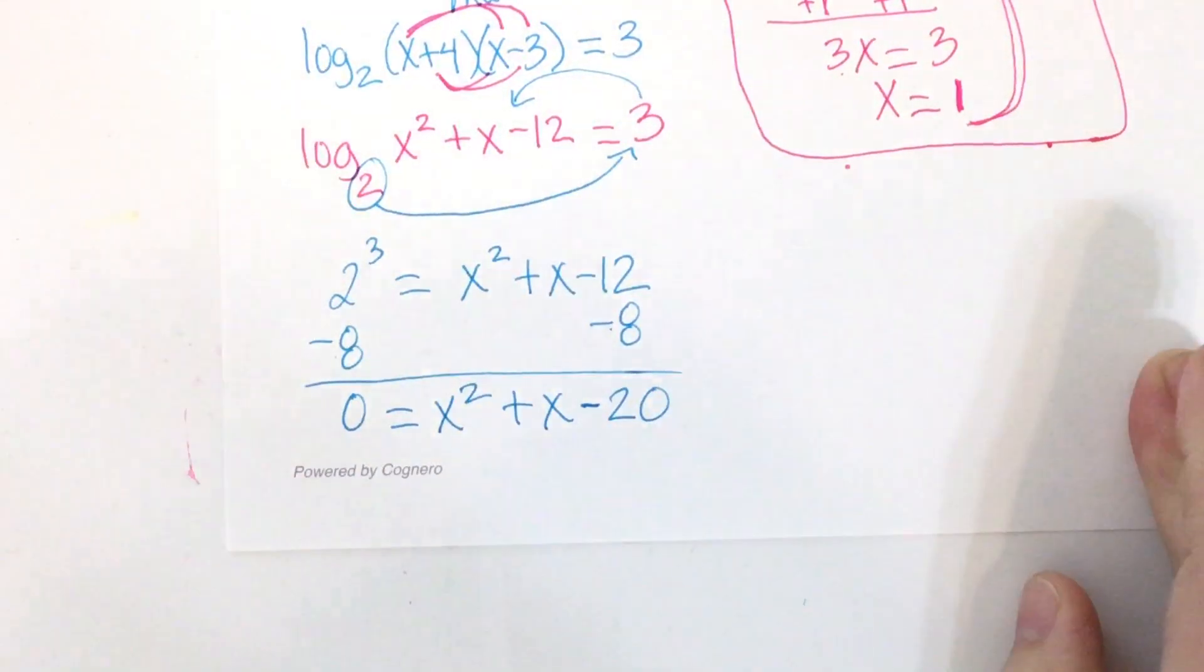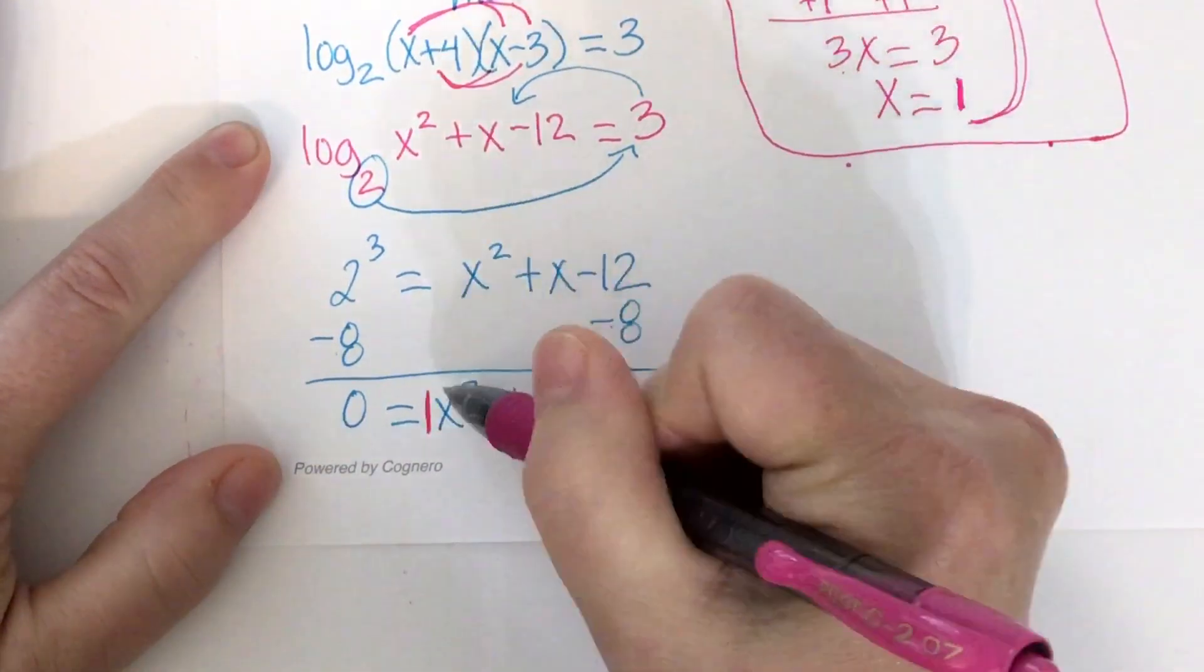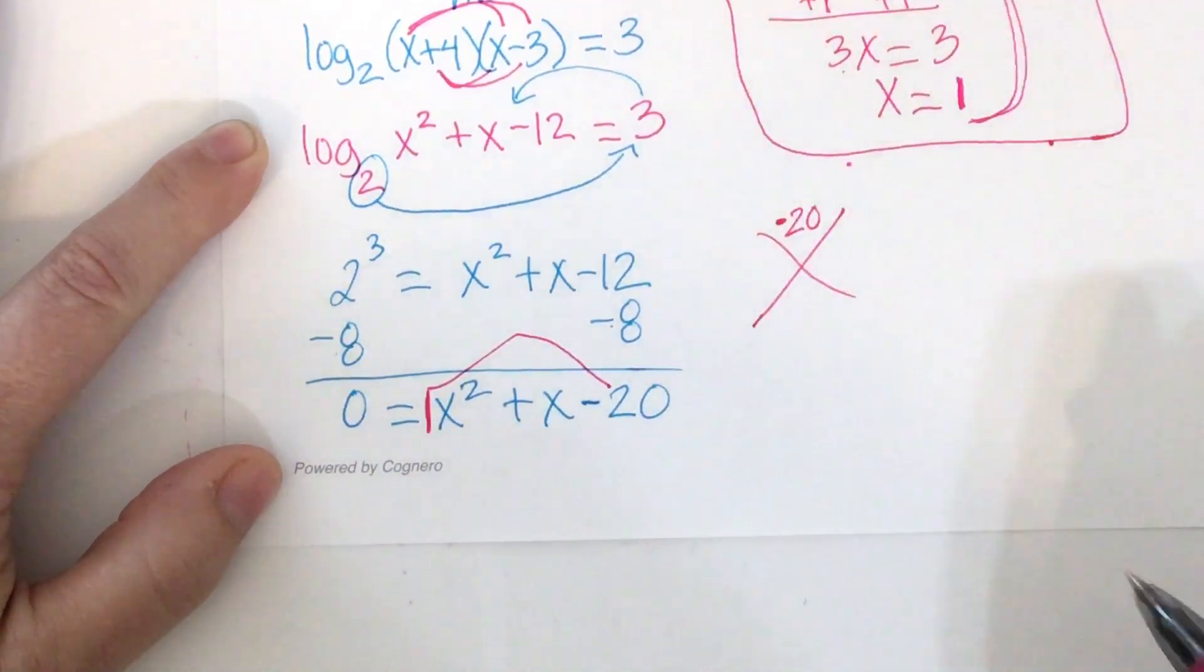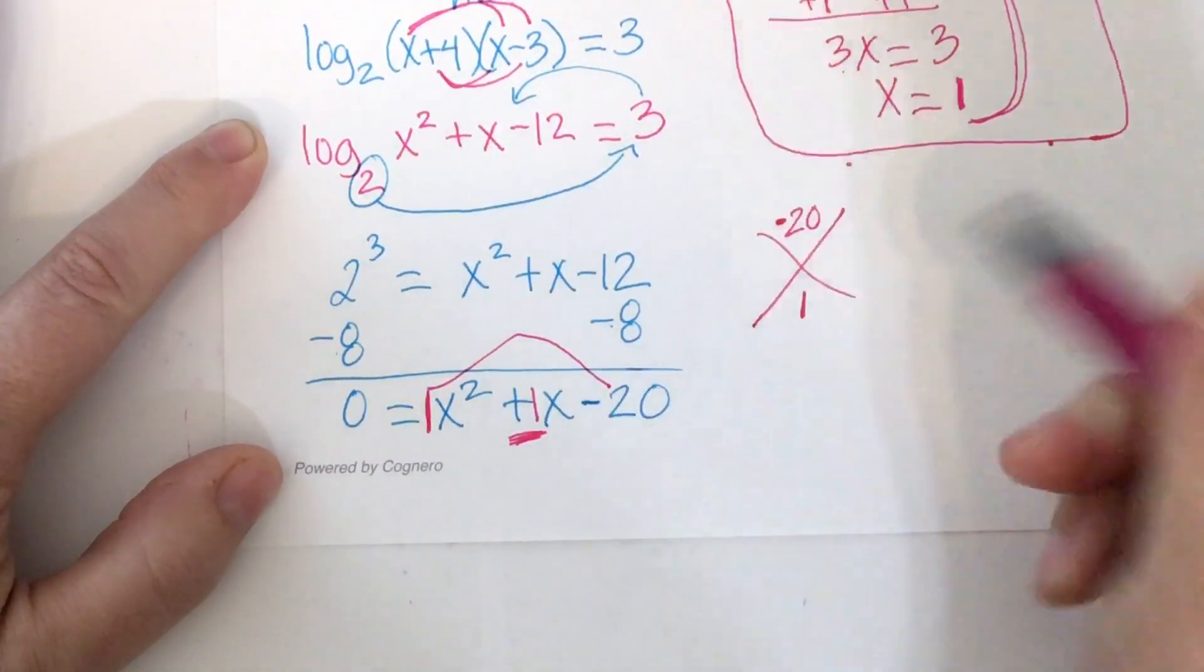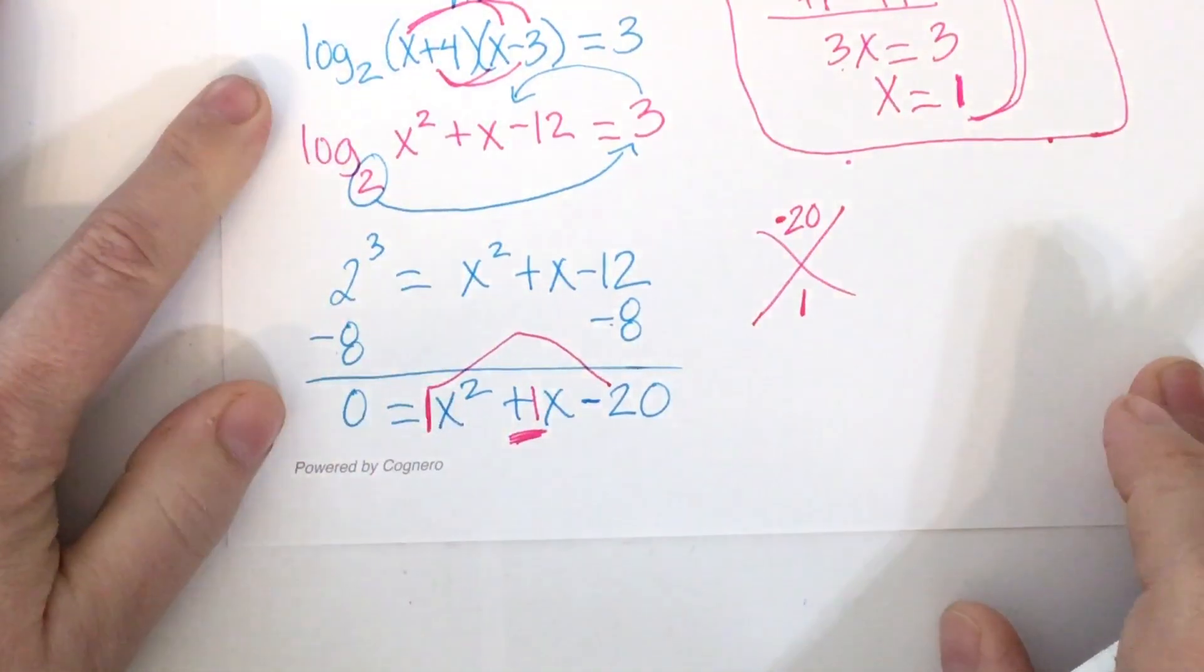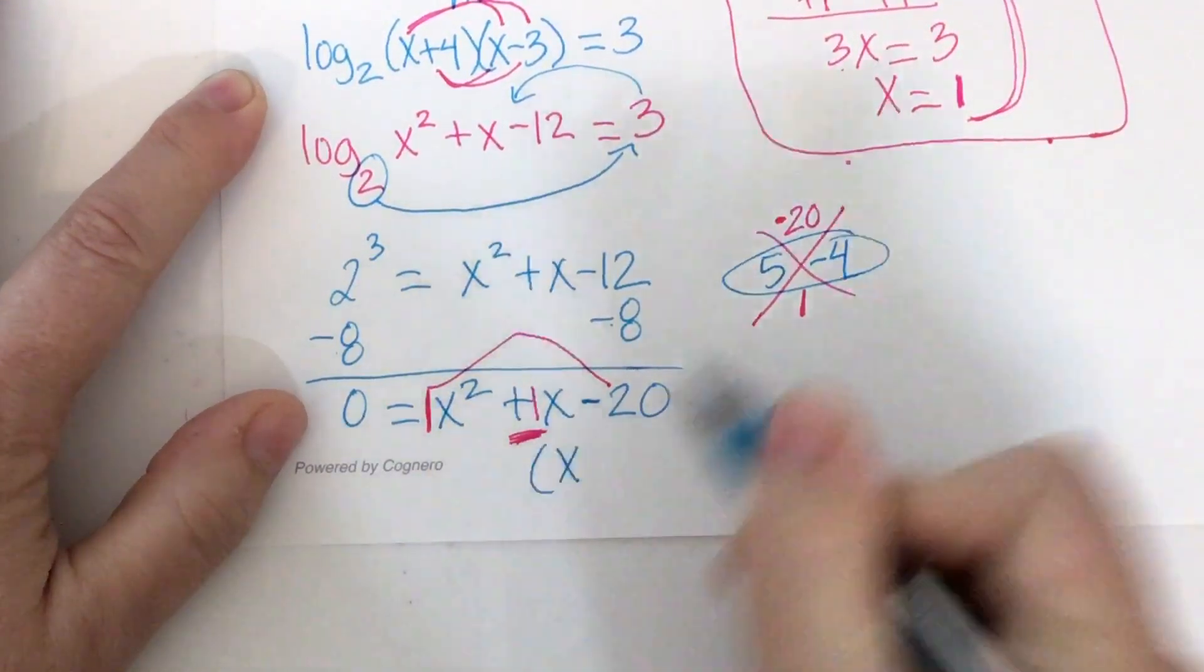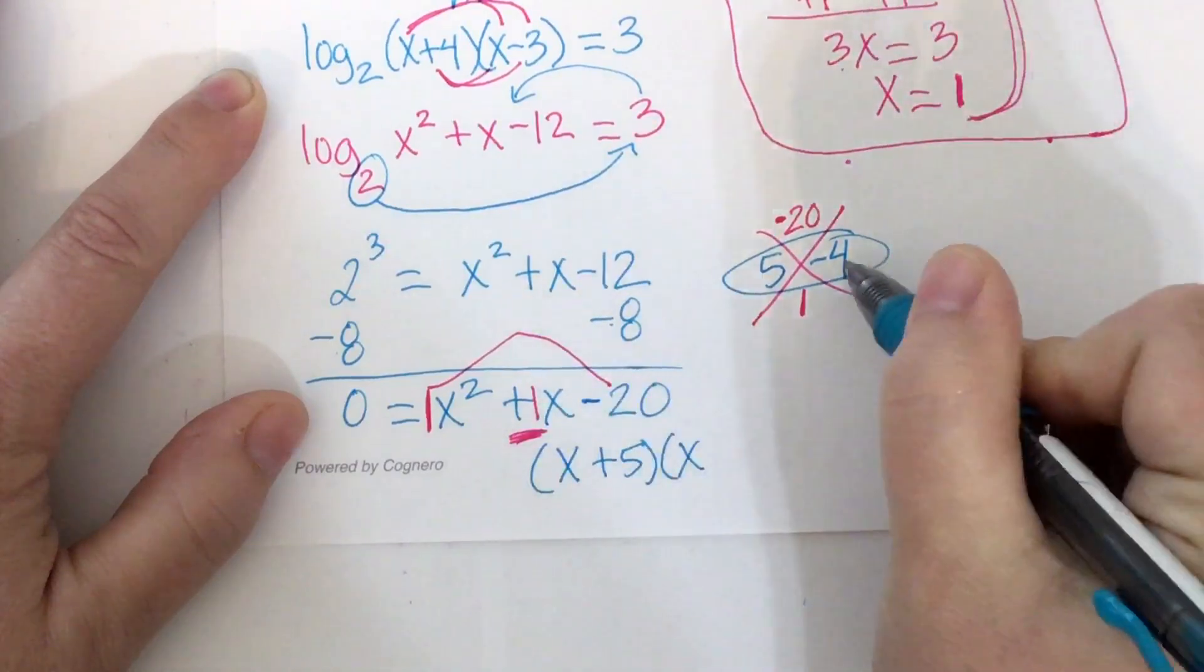Okay. So now I can a times c rooftop this. And it's the easy one. So a times c, 1 times negative 20 is negative 20. I want the numbers to add to make 1. And do you know what multiplies to make negative 20 and adds to make 1? 5 and negative 4. So one parenthesis will be x with a plus 5. And the other set of parentheses will be x with a minus 4.